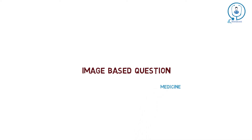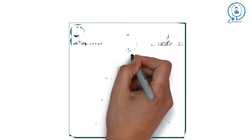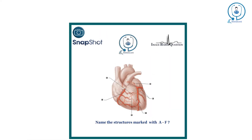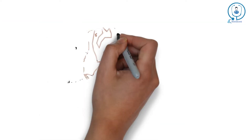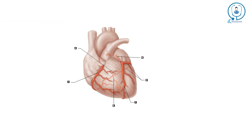So here we have our first episode. In this episode, we are going to discuss image-based questions on medicine. Our first question: name the structures marked with A to F. Let's zoom out this image. So here we have the first labeling, that is anastomosis.